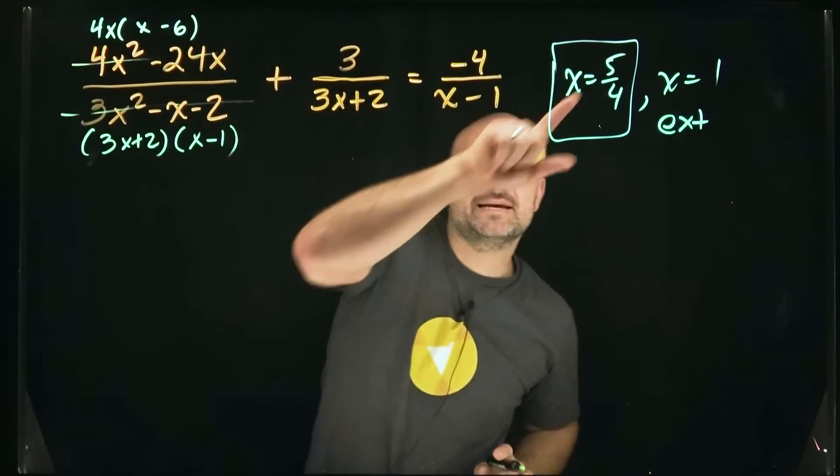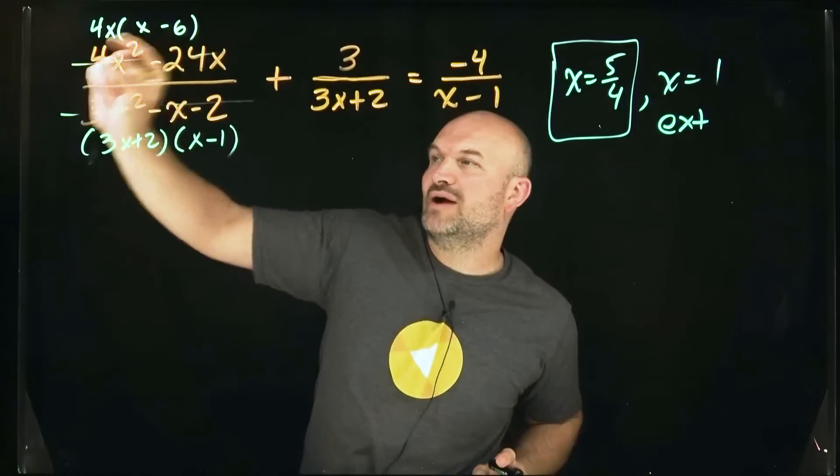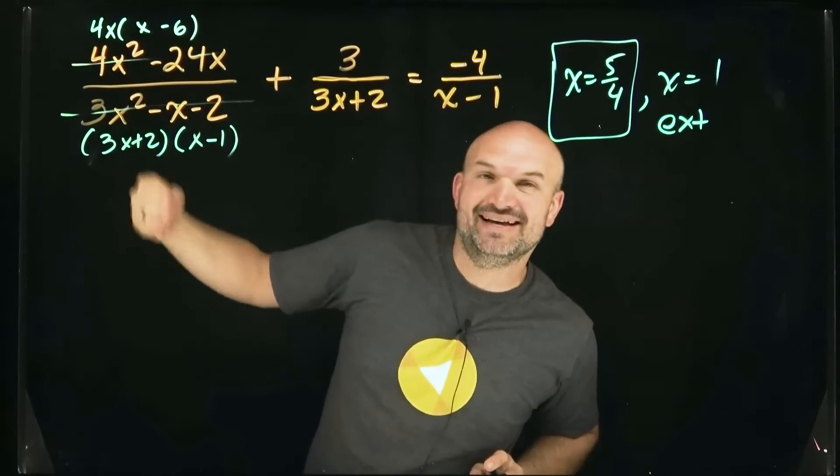Now what I'm simply going to do is take my five-fourths and I'm going to plug it in for every single x. Then go ahead and simplify.